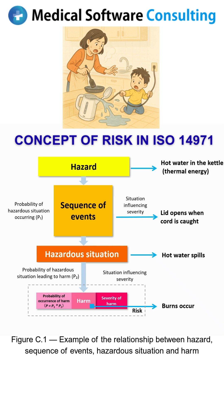In this example, the hazard is the hot water in the kettle — that is, thermal energy. The sequence of events could be that the power cord gets pulled, the lid opens, and hot water spills out. This situation represents a hazardous state. However, a hazardous situation alone does not yet mean harm. Harm occurs when someone touches the spilled hot water and suffers a burn.